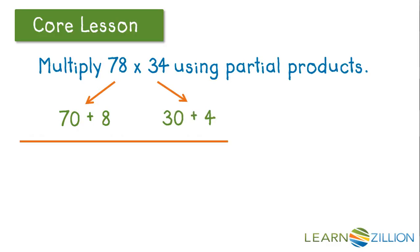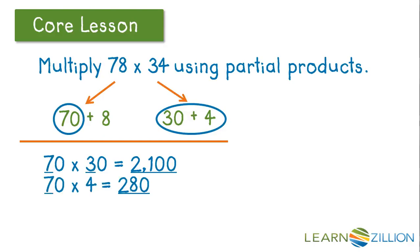Now we'll multiply the 70 times each of the digits in the next number. So we have 70 times 30 to equal 2100. If we think about our powers of 10, we know that 7 times 3 is 21 and we add our two zeros to create 2100. Now we multiply 70 times 4 to get 280. Again, 7 times 4 is 28 and we add our zero.